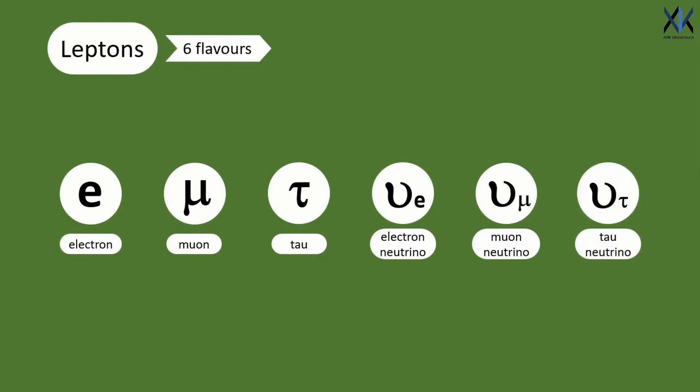Electron, muon, and tau are charged particles having a negative charge. While all types of neutrinos are neutral chargeless particles which barely interact with anything.